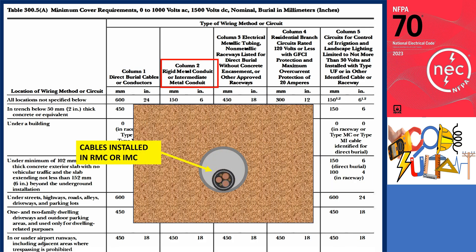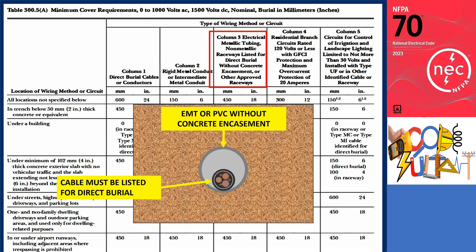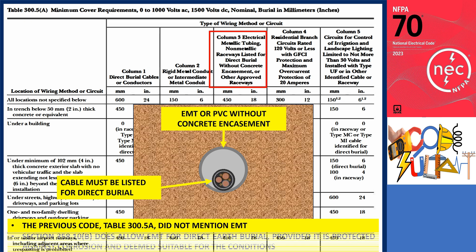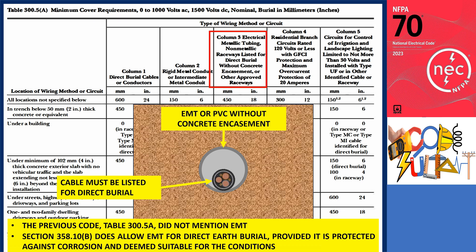Column 2 is for cables installed in rigid metal conduit or intermediate metal conduit. Column 3 pertains to conductors installed in electrical metallic tubing (EMT), non-metallic raceways listed for direct burial without concrete encasement, or other approved raceways. The previous Table 300.5(a) did not specifically mention EMT, leading some to believe EMT was not recognized for underground use. However, Section 358.10(B) does allow EMT for direct earth burial, provided it is protected against corrosion and deemed suitable for the conditions.